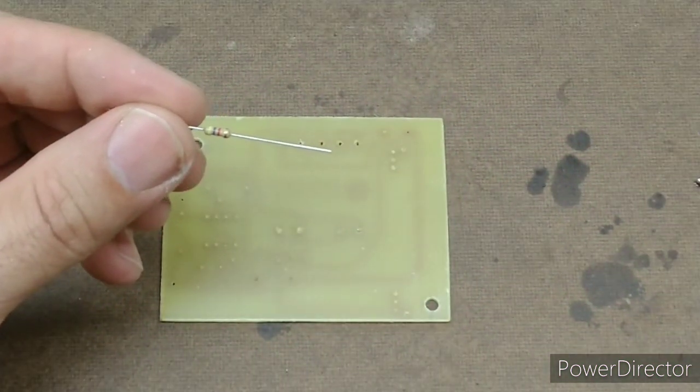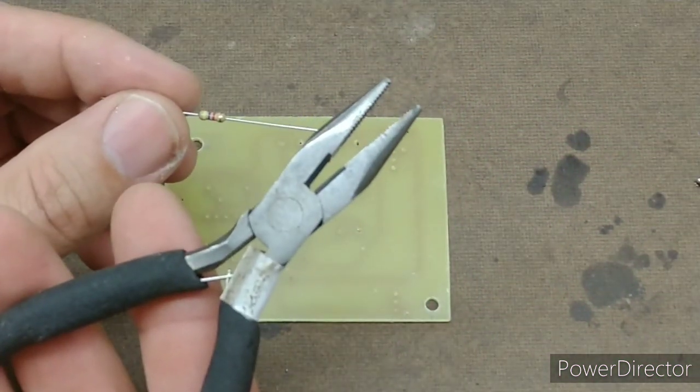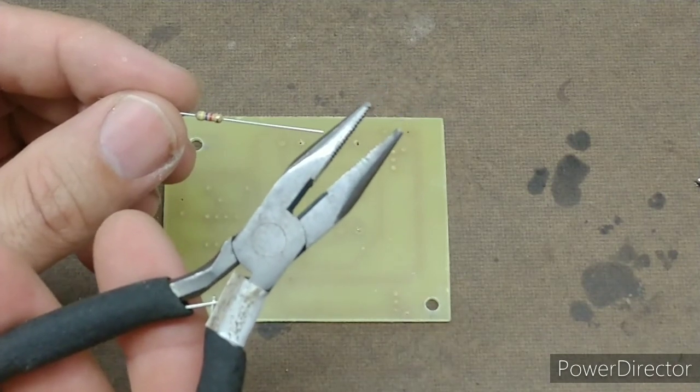When you're ready to attach your resistors, you're going to need a pair of needle nose pliers and the four resistors for this kit.